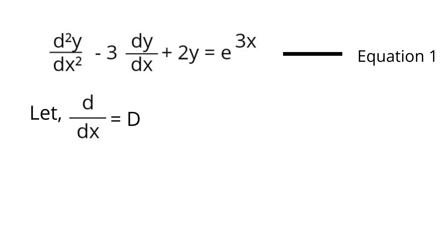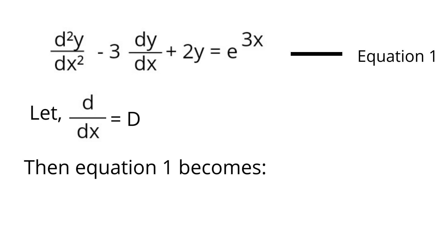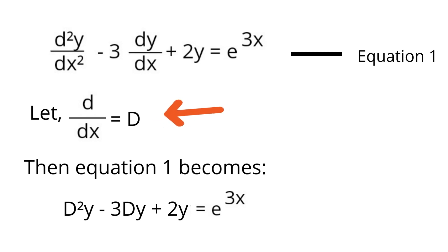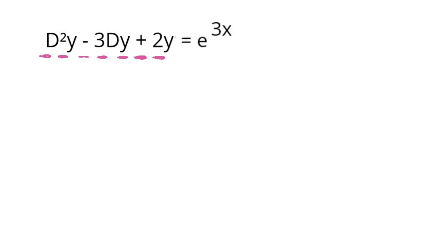Now, what I will be doing is replacing d/dx with capital D. Equation 1 will become D²y minus 3Dy plus 2y is equal to e raised to the power 3x. The first term d²y/dx² becomes D²y, the second term minus 3dy/dx becomes minus 3Dy, and the third term 2y remains simply 2y since there is no d/dx in it.